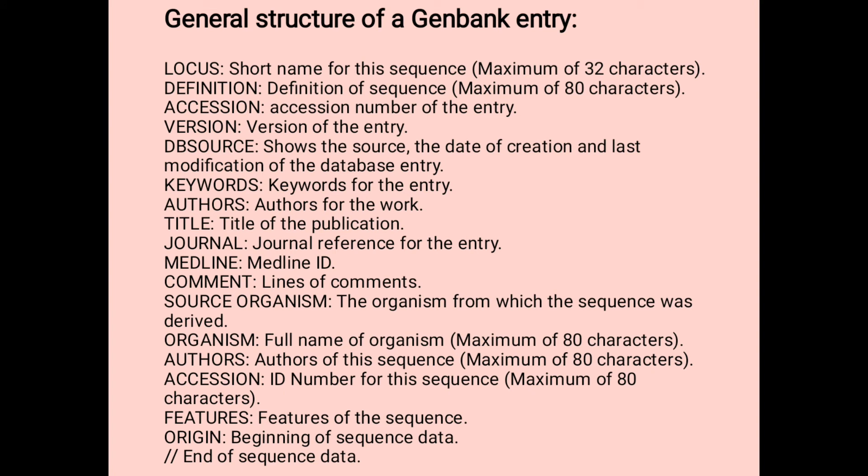The general structure of a GenBank entry begins with the Locus — the locus name is unique to each organism. The first three characters usually designate the organism; the fourth and fifth characters show other group designations such as gene product for segmented entries; and the last character is one of a series of sequential integers. The Definition is a brief description of the sequence, including information such as source organism, gene name, protein name, or some description of the sequence's function. If the sequence has a coding region (CDS), the description may be followed by a completeness qualifier such as 'complete CDS'.